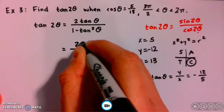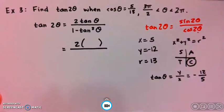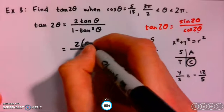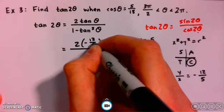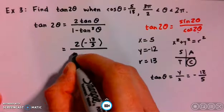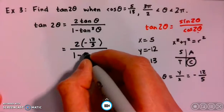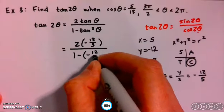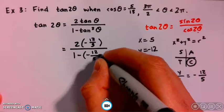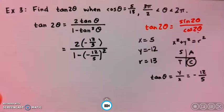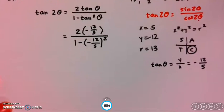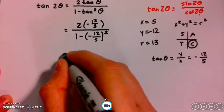So I have 2 times, and tangent of theta is negative 12 over 5. In the denominator, I have 1 minus, and I'm going to do tangent squared this time. So I'm going to write negative 12 over 5, and square that. Now that I've plugged in all these values, I just need to start simplifying.